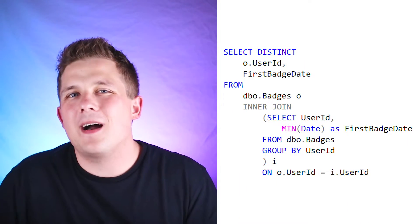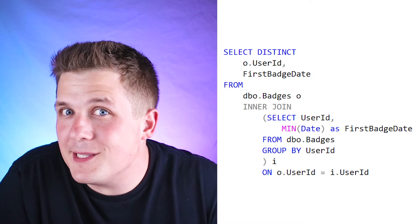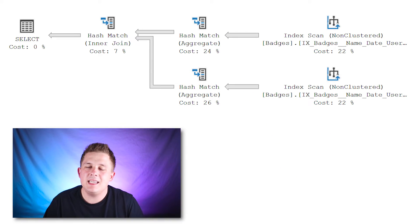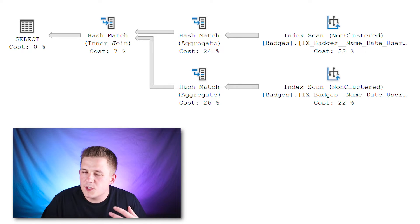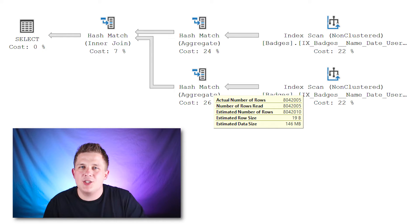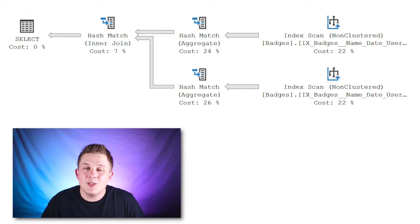If we want to improve the performance of this query, one thing we could try is turning this correlated subquery into a derived table query. That means we get rid of the relationship between the inner and outer queries and instead take our subquery, put it into a derived table, and define the relationship there. This may not seem like a big change since we're just moving our subquery from our SELECT statement to our FROM statement, but it does have an impact on the execution plan. You'll see that the layout is somewhat different — both the left and right streams heading into our join are now reducing the data. The first stream takes all 8 million rows in our badges table and applies the MIN date function, returning only a million rows into the hash match join.